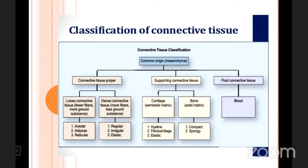This is the classification of connective tissue. In connective tissue there are three types: connective tissue proper, supporting tissue, and fluid connective tissue. In the previous class, we discussed loose connective tissue — that is areolar, adipose, and reticular. The remaining portion is dense connective tissue. We have to discuss today — that is regular, irregular, and elastic.